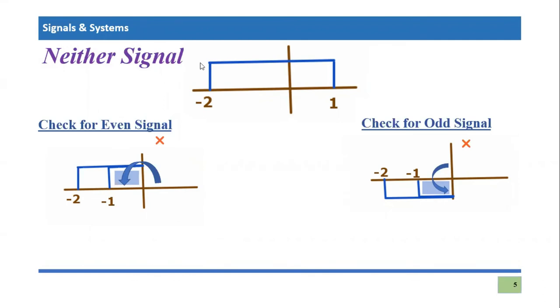So just to express the fact that I explained you right now in mathematical form, it will look like this. So this is an x(t) signal. This neither signal is an x(t) signal. And it has even part, which is called xe(t) and it has also odd part, which is called xo(t).